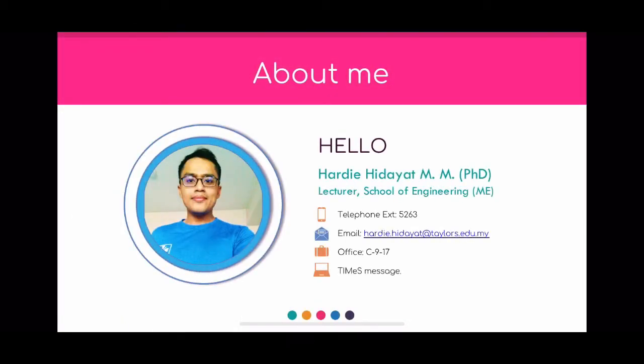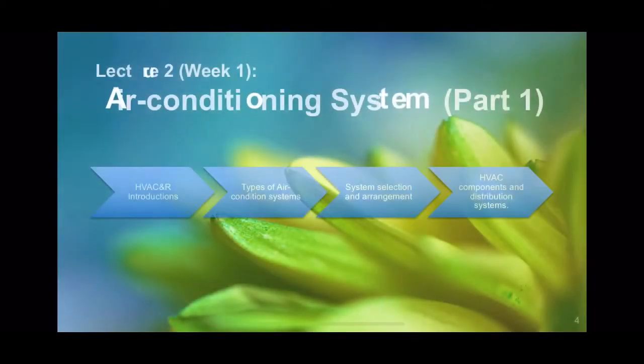You're familiar with the next slide because you have seen it in the previous week. It shows my name, where you can find me at C9 or Block C Level 9, my telephone extension 5263, and my email that you can reach if you have any issues or doubts in our lecture. You can also TIMES message me if necessary.